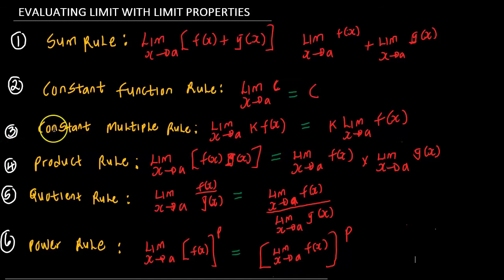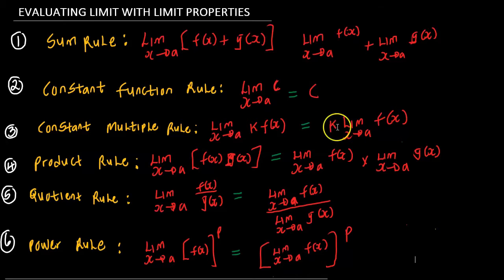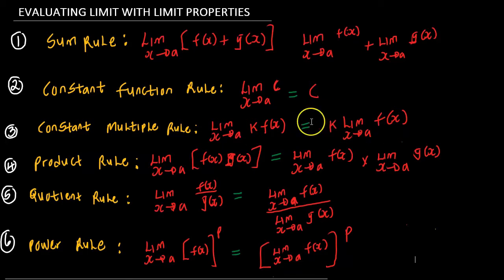The third rule is what we know as the constant multiple rule. This rule states that the limit of a constant times a function is equal to the product of the constant and the limit of the function. So whenever we have a constant multiplied by a function, the limit is going to be the constant multiplied by the limit of the function.